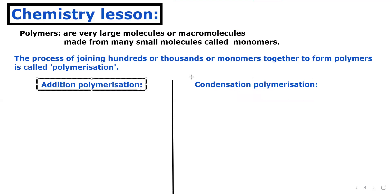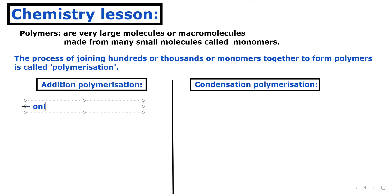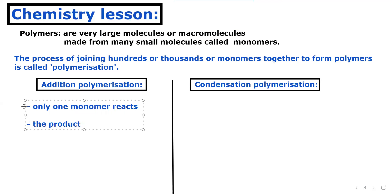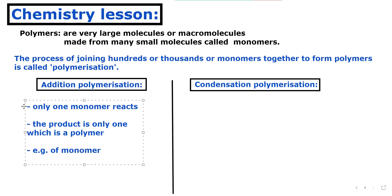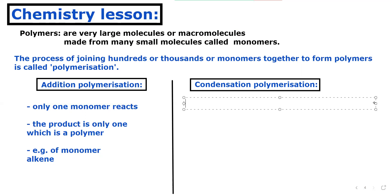When talking about the difference between these two, in addition polymerization there is only one monomer — so only one monomer reacts, and the product is only one, which is a polymer. The monomer will always be an alkene because it will have double bonds in it. This is just an overview; we will understand it with examples as we go further.